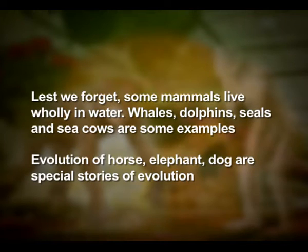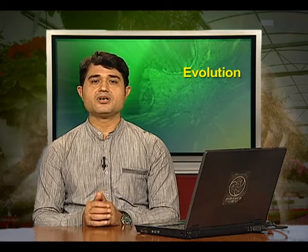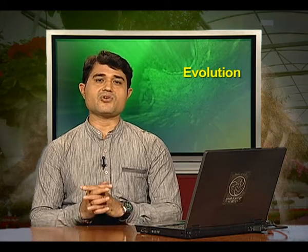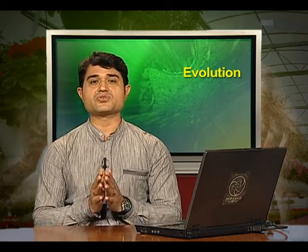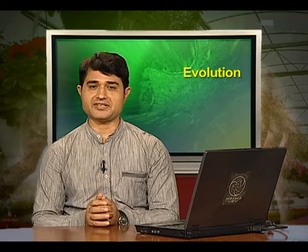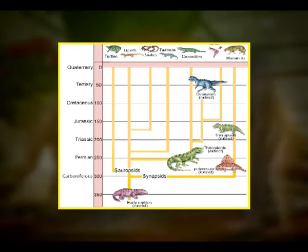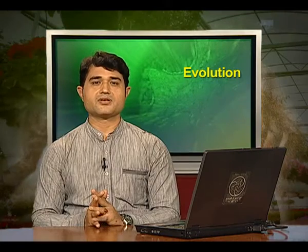The evolution of horse, elephant, dog, and others are special stories of evolution that you will learn about in higher classes. The most successful story is the evolution of man, with language skills and self-consciousness. A rough sketch of the evolution of life forms and their times on geological scales is indicated here.